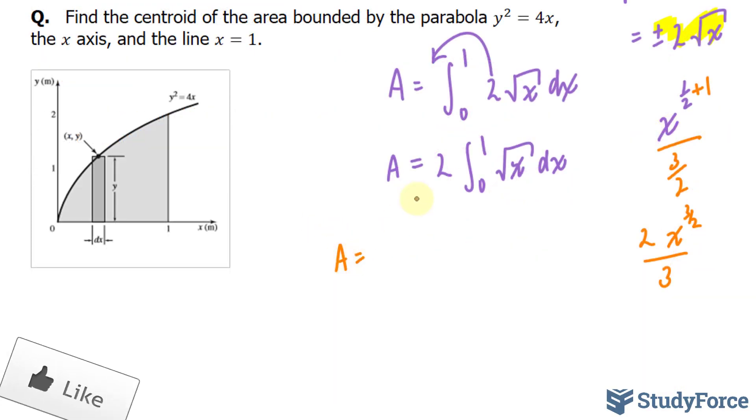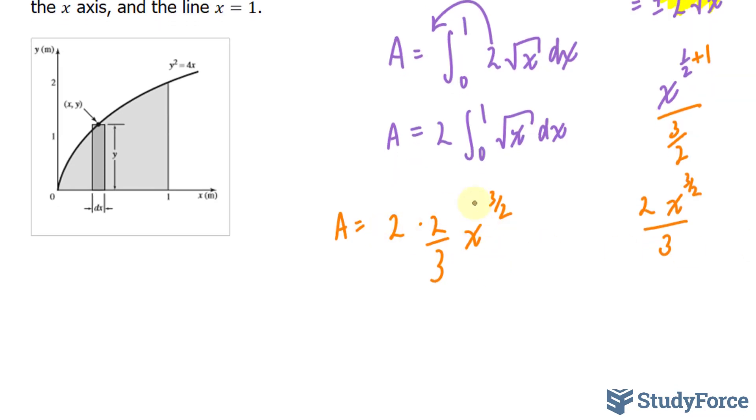Therefore, my area is equal to 2 times this expression that we just found, 2 over 3, x to the power of 3 over 2. Now we will evaluate this when x is equal to 1, and when x is equal to 0. If we substitute 1 into here, we end up with 4 over 3 minus, and if we substitute 0 into here, we end up with 0. So our area is 4 over 3 units squared.